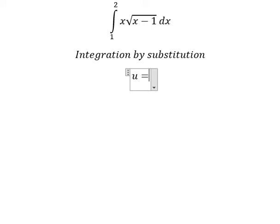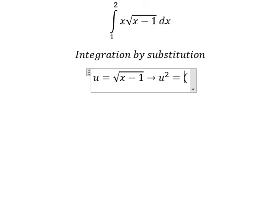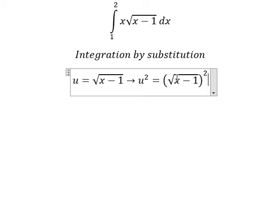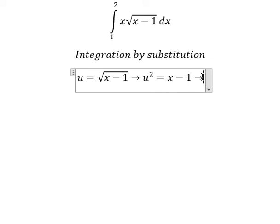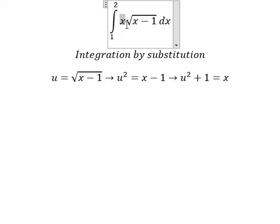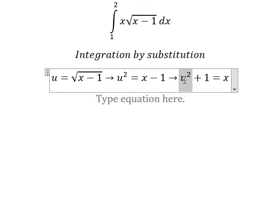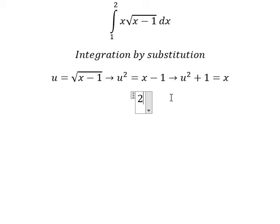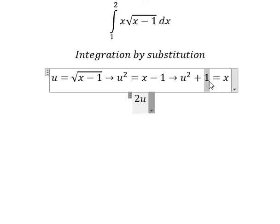We let u equal to the square root of (x minus 1), then square both sides to cancel the square root. Moving the negative one to the left, we get u squared plus one equals x. Taking the derivative: the derivative of u squared is 2u, and the constant gives zero.